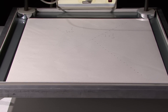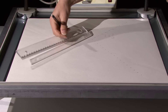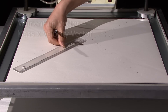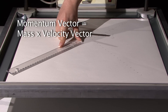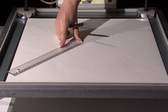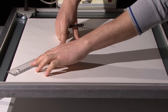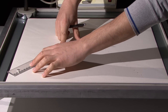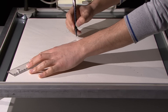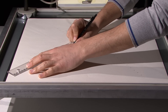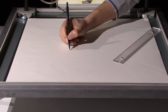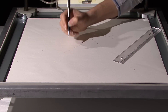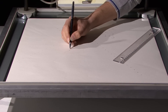Calculate total momentum before the collision. The momentum vector of an object equals the product of its mass and velocity vector. In this experiment the pucks are identical, so it is sufficient to calculate their resultant velocity vector. For this purpose, draw vectors representing the velocities of the pucks using a scale and taking the directions of motion into consideration.